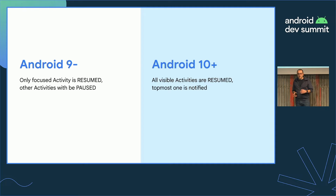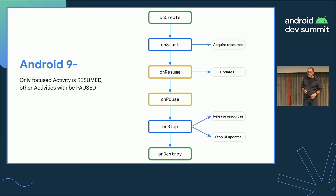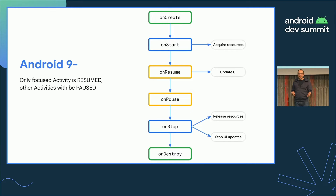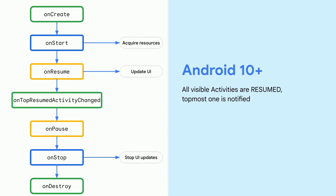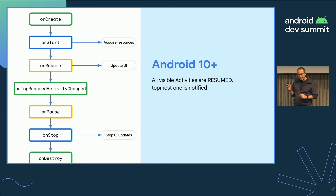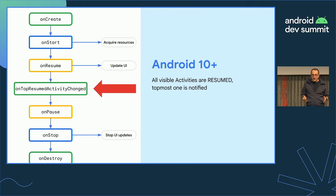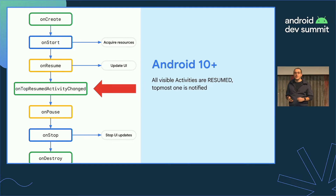The last activity the user interacted with is notified with a flag. Up until Android 9, you would acquire resources during the started phase, update the UI during the resume step, and release acquired resources and stop UI updates in the stop phase. With Android 10, things change a little bit. You do the same things in the started and resumed phase and stop UI updates in the stop phase, but there is something new: onTopResumedActivityChanged will tell you via a flag if yours is the topmost activity — the one the user most recently interacted with.